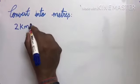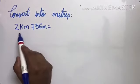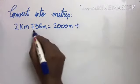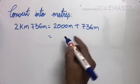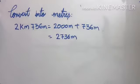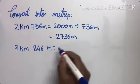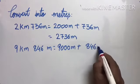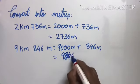If the question is two kilometers and seven hundred thirty-six meters, first we will change the kilometers into meters. Two kilometers is one thousand meters, plus seven hundred and thirty-six meters. So our answer is two thousand seven hundred and thirty-six meters. Similarly, nine kilometers eight hundred and forty-six meters: nine thousand meters plus eight hundred and forty-six meters gives us nine thousand eight hundred and forty-six meters.